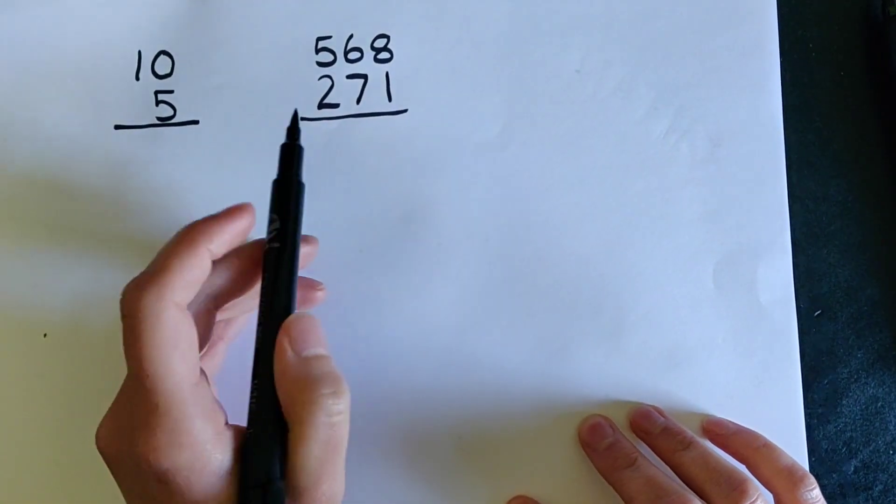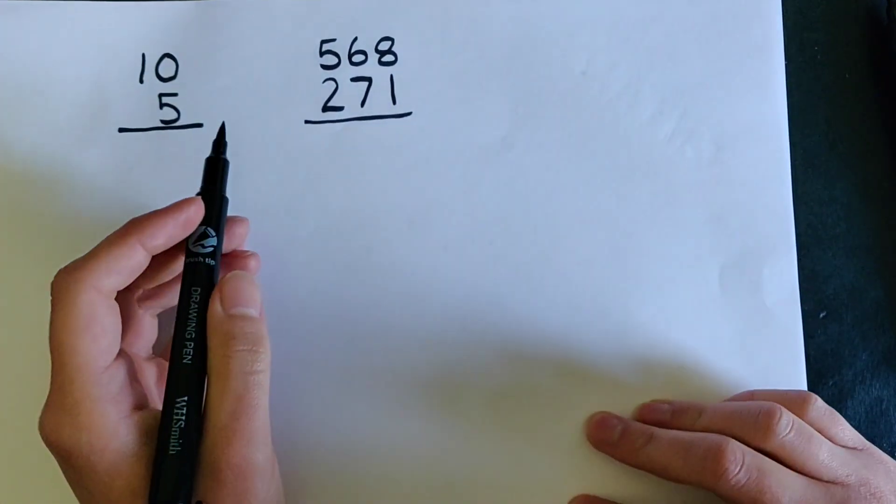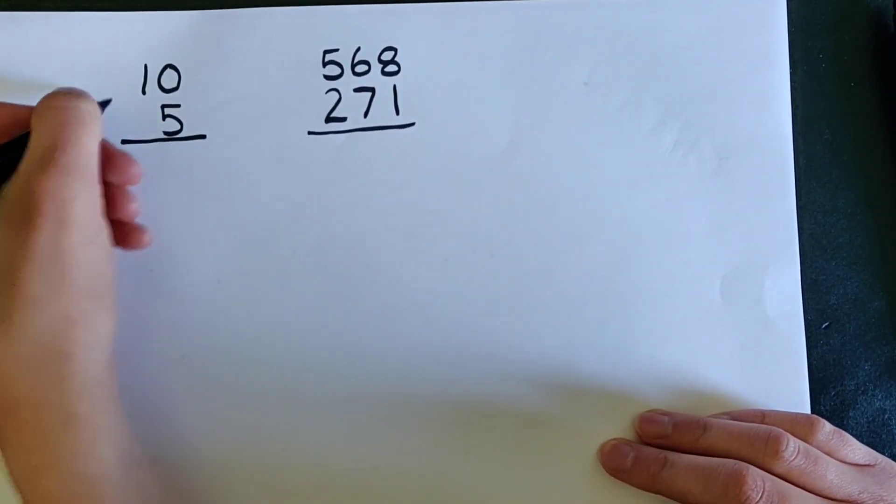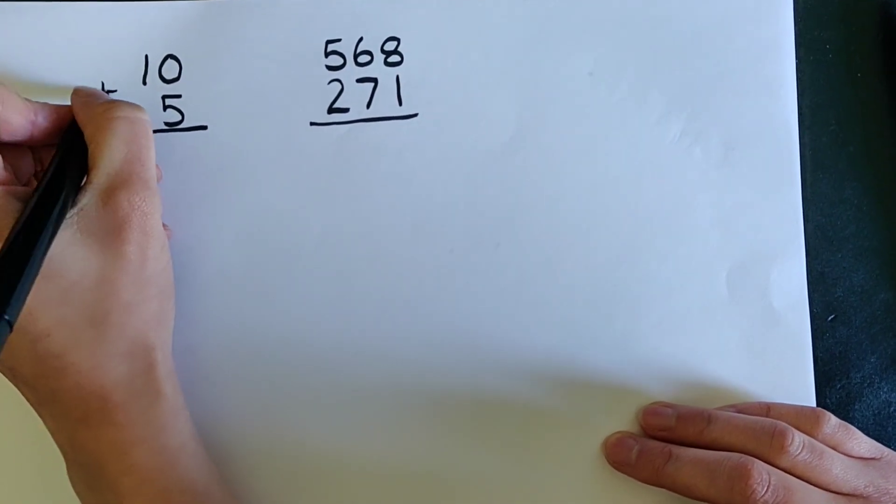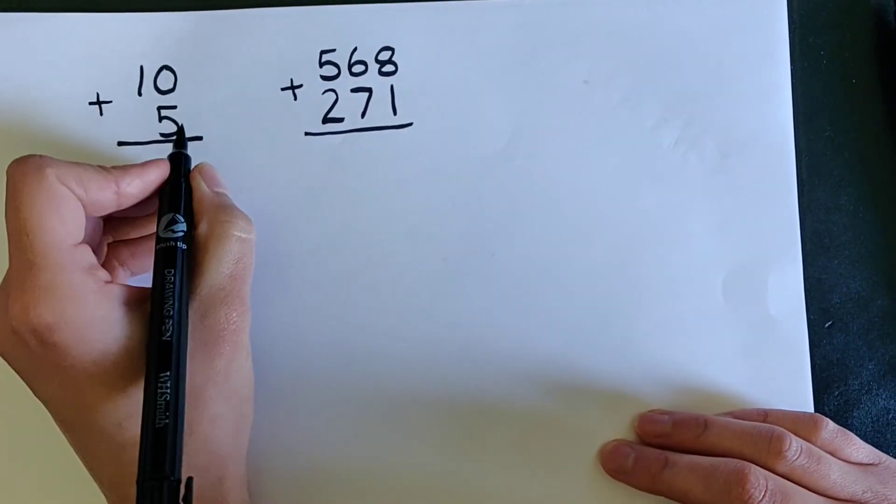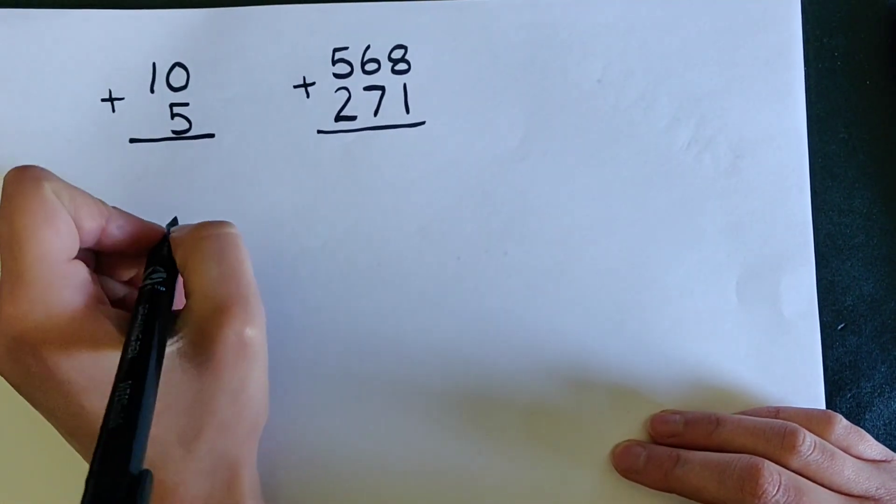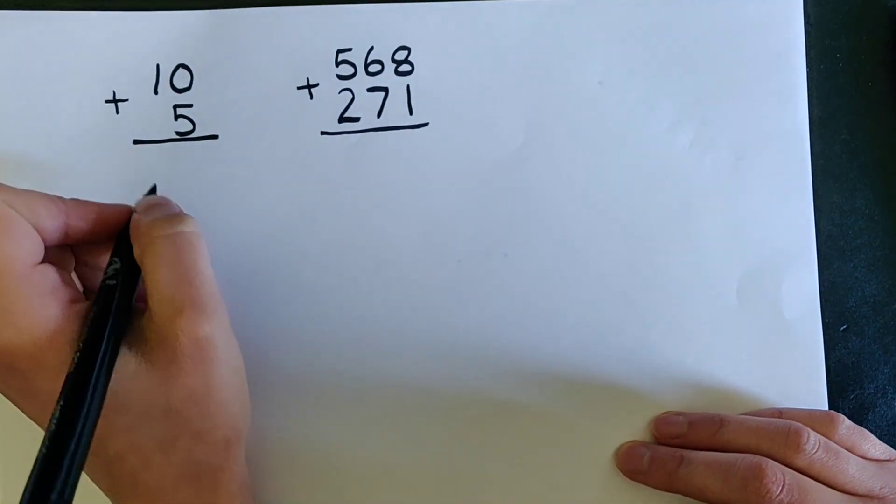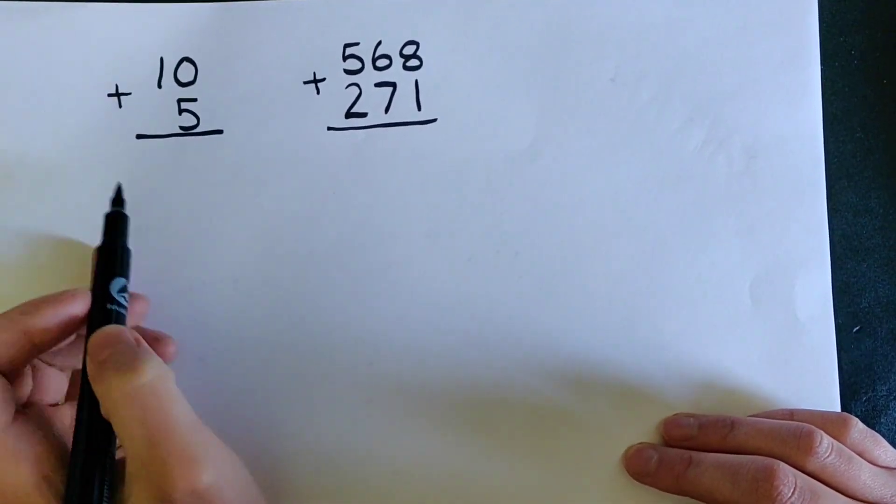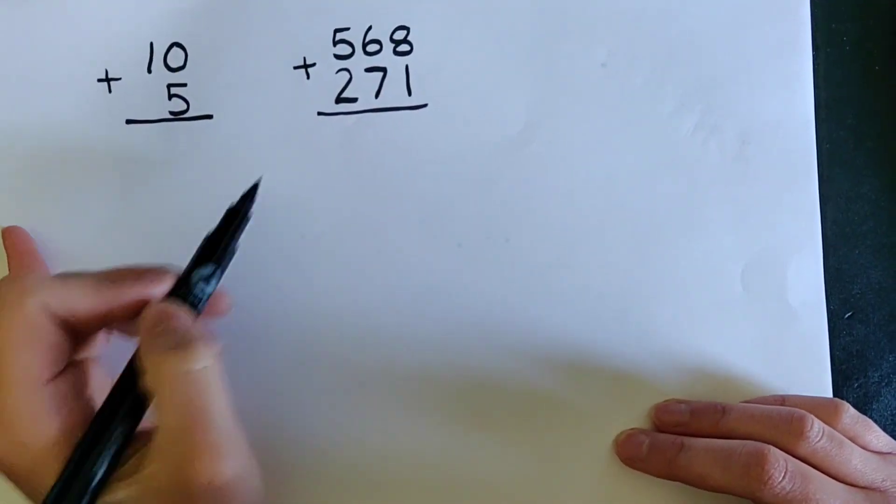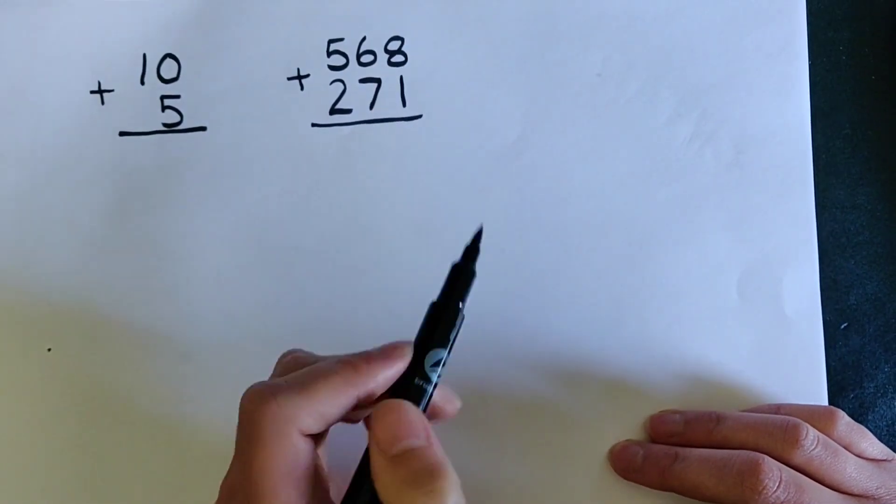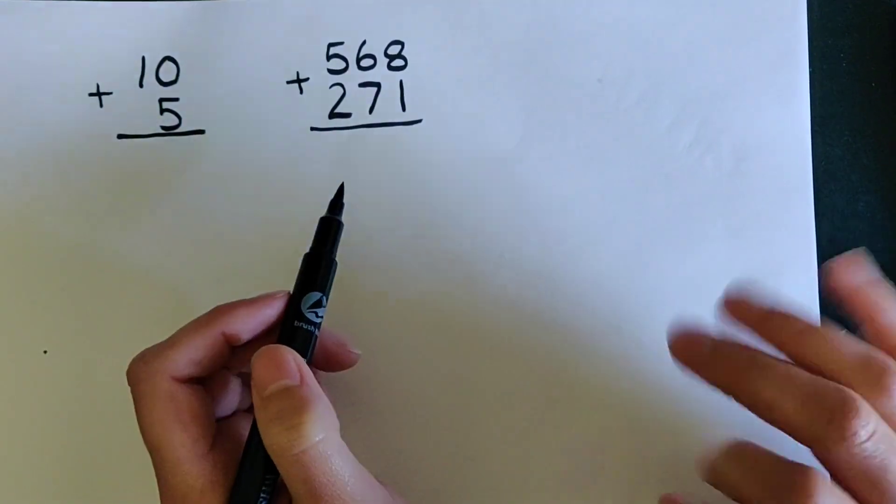Now the first rule when we're writing out an addition question in column addition format is to make sure we have done one thing that I've already forgotten. I need to put my addition symbol here. The reason we do that is so that we don't get confused and forget and do subtraction or something else silly instead. I'm going to show you how to do this one first. I'm sure you've already worked it out and you're going to say miss this is too obvious and too easy and then we're going to do this one together just so I can remind you of what we need to do when something a little bit trickier comes up.